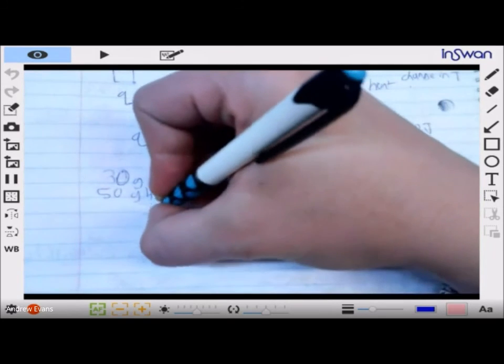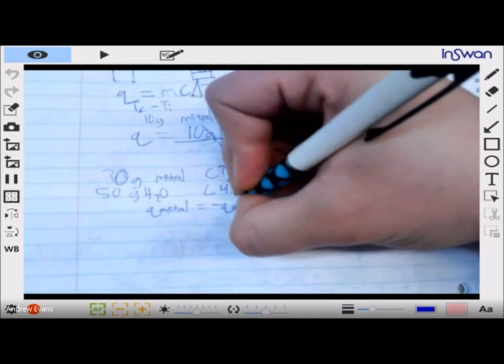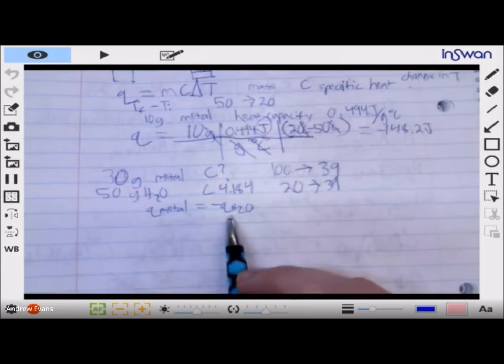So what we have to do is we have to set both q's equal to each other. We're going to say the q of the metal is equal to negative q of the water, because the heat lost by the metal will be gained by the water.